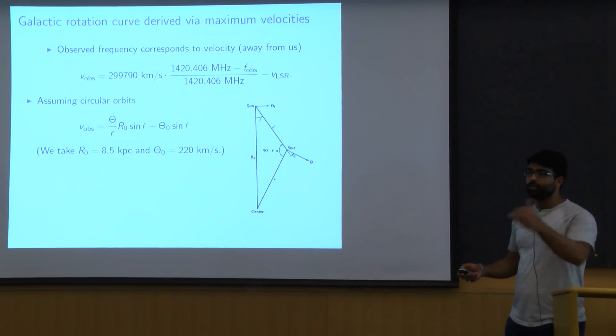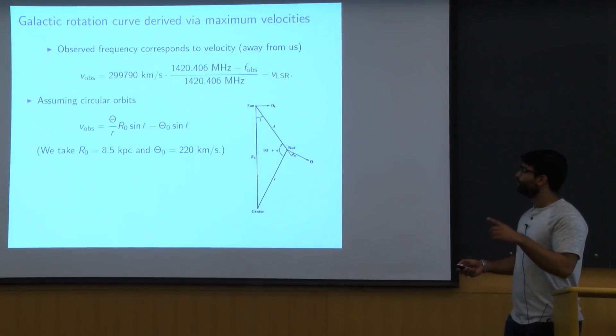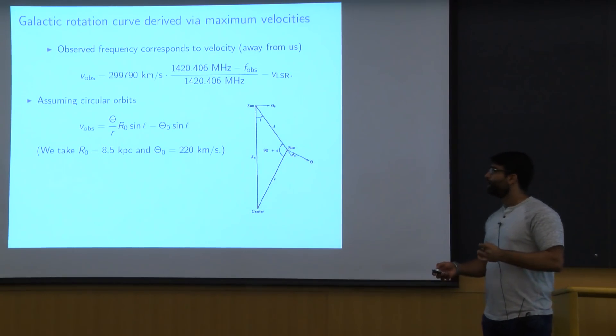And here we're going to be taking R_0, which is the distance from us to the center of the sun, to be 8.5 kiloparsecs. And theta_0, which is our speed within the galaxy to be 220 kilometers per second. These numbers are not too well known, but these will be the values we'll be using and the literature we'll compare against will be using these same values.